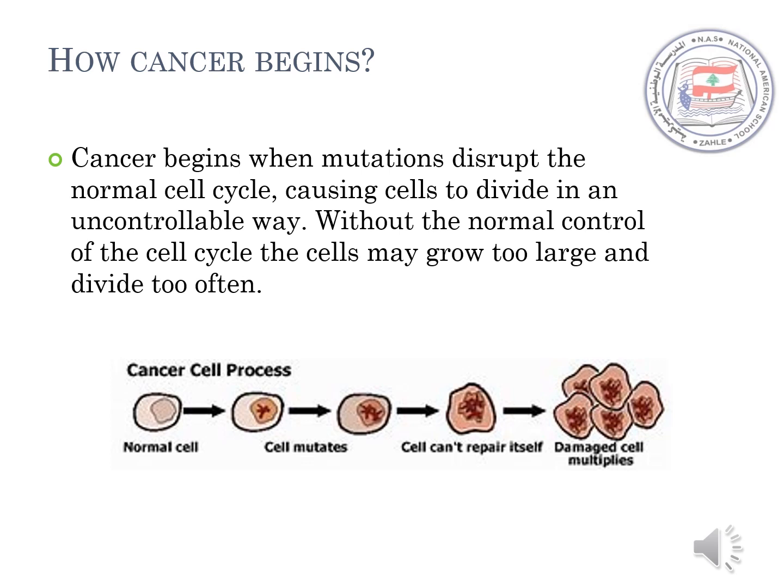Cancer begins when mutations disrupt the normal cell cycle, causing cells to divide in an uncontrollable way. Without the normal control of the cell cycle, the cells may grow too large and divide too often.